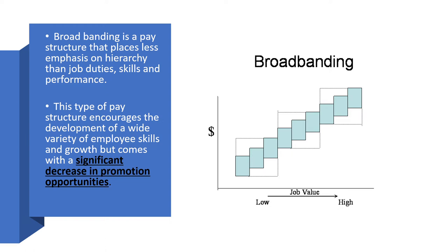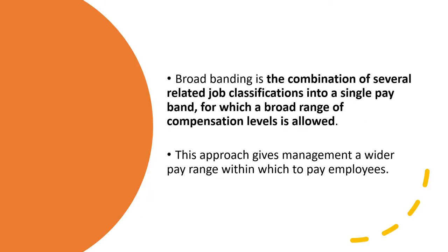On the right-hand side there is a graph of broadbanding — on the vertical side we have pay, and on the horizontal side we have job value. As job value increases from left to right, the pay obviously increases. Broadbanding is the combination of several related job classifications into a single pay band, for which a broad range of compensation levels is allowed.